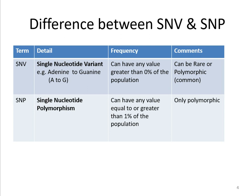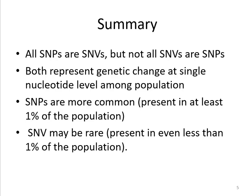So the only difference between these two terms is frequency. If its frequency is one percent or higher, it is an SNP. If its frequency is less than one percent, it is an SNV. In summary, all SNPs are SNVs, but not all SNVs are SNPs.